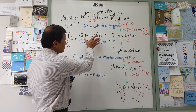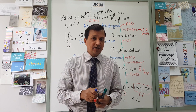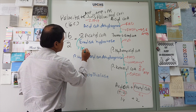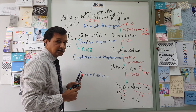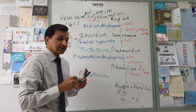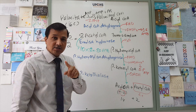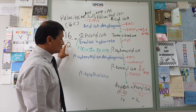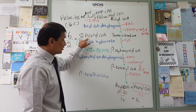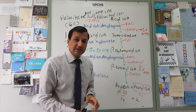Each acetyl-CoA gives you 10 ATPs. So 10 multiplied by 8 means you get 80 ATPs from the 8 acetyl-CoA molecules. To recap: 16 carbons divided by 2 (since each acetyl-CoA is a 2-carbon unit) gives 8 acetyl-CoAs, and each gives 10 ATPs, so 8 × 10 = 80 ATPs.